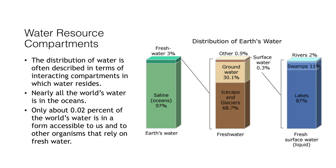The distribution of water is often described in terms of interacting compartments in which water resides, sometimes briefly and other times for eons. The length of time water typically stays in a compartment is its residence time. On average, a water molecule stays in the ocean for about 3,000 years before it evaporates and starts through the hydrologic cycle again. Nearly all of the world's water is in the oceans. Oceans play a crucial role in moderating the Earth's temperature, and over 90% of the world's living biomass is contained in the oceans.